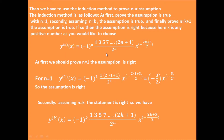Then we assume this assumption is also right for n equals k. So the kth order derivative equals minus 1 to the power of k times 1 times 3 times 5 times 7 times ... times 2k plus 1, divided by 2 to the power of k, times x to the power of minus 2k plus 3 divided by 2.